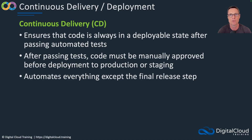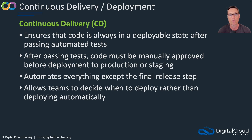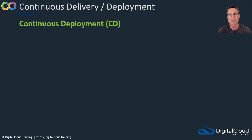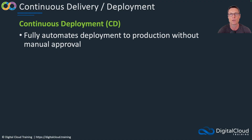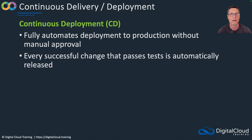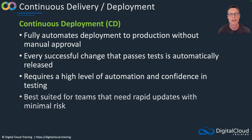With continuous delivery, everything is automated except for the final release step, which allows teams to decide when to deploy rather than deploying automatically — giving you an extra check and balance and control over timing. Continuous deployment is very similar except it fully automates the deployment to production without any manual approval. Every successful change that passes tests is automatically released. This requires a high level of automation and confidence in testing, so it's best suited for teams that need rapid updates with minimal risk.